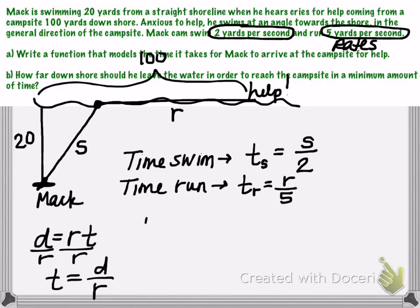And since we want an equation for total time, how much time is he going to spend altogether, then we're going to have to add the time that he spends swimming to the time he spends running. So his swim time is S divided by 2, and we'll add it to his run time, which is R divided by 5. Be careful because my 5 starts to look like an S.